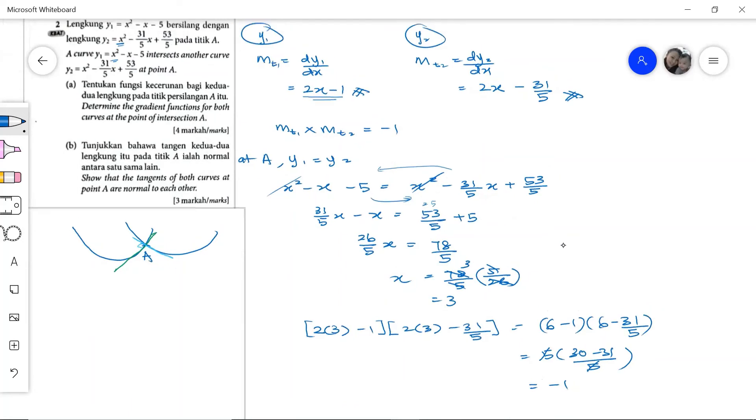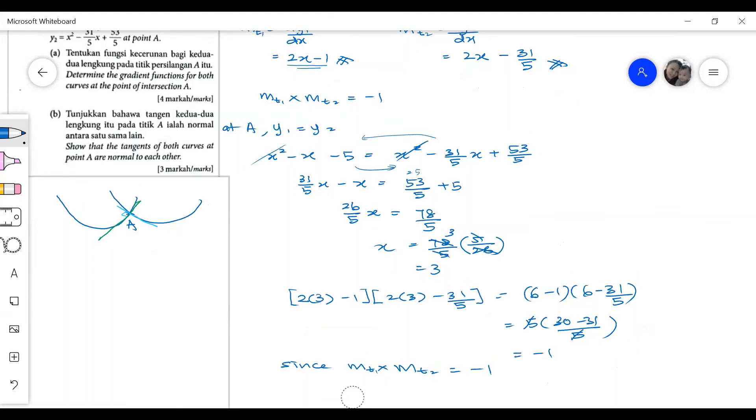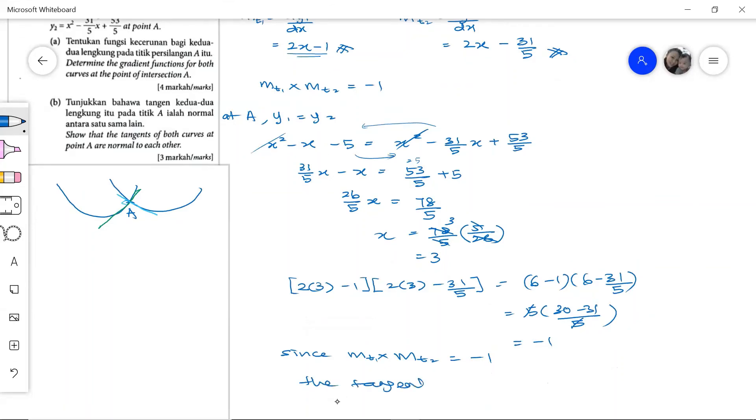Since the gradient of the tangent from the first curve times the gradient of the tangent from the second curve equals negative 1, we can conclude that the tangents are normal to each other. They make 90 degrees with each other. That's it for question number 2.